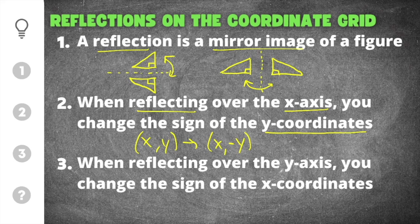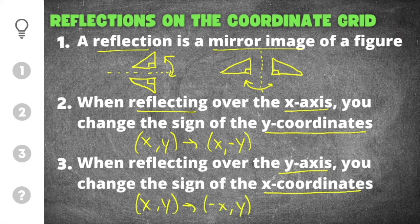When you're reflecting over the y-axis, you change the sign on the x-coordinate. For your x and y-coordinates in your image, the x-coordinate will change signs and the y-coordinate will stay the same. If x is positive, it'll become negative. If x is negative, it'll become positive.